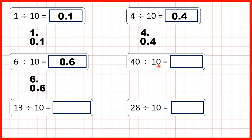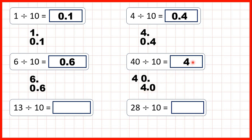Now we have 40 divided by 10. We already know how to do questions like this — 10 times 4 is 40, so 40 divided by 10 is 4. But I want to use the same method I've been using so far, because what we're really doing is the same thing. We write out the number 40 with the decimal point at the end, copy down the decimal point, and we're dividing by 10, so the digits move one square to the right. We copy the zero down one square to the right, and do the same with the 4, and we get 4.0. But remember, 4.0 is the same as 4 — a point zero on the end just tells us we don't have any tenths, but a whole number tells us that as well. So we can just write 4 as our answer.